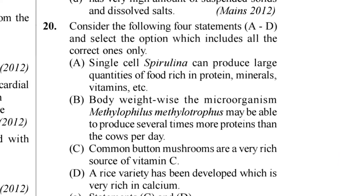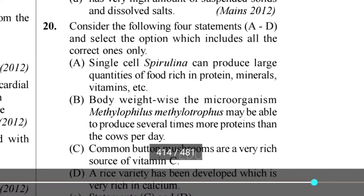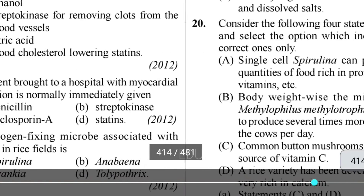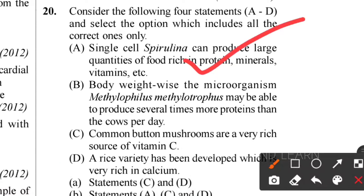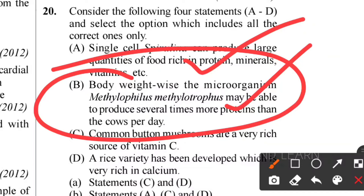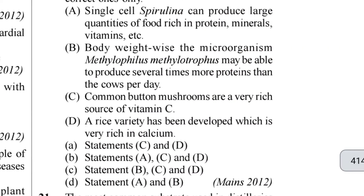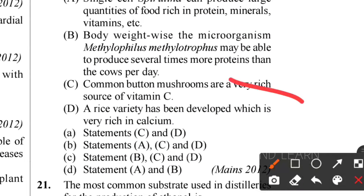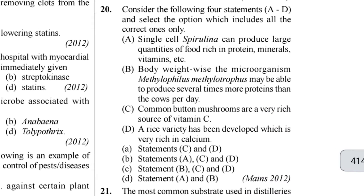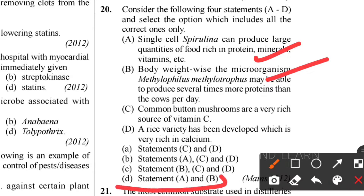Twentieth question: which statements are correct? Statement A - single-cell Spirulina can produce large quantities of food rich in protein, minerals and vitamins - correct. Statement B - body weight-wise, the microorganism Methylophilus methylotrophus may produce several times more protein than a cow per day - correct and very important. Statement C - common button mushrooms are rich in vitamin C - wrong. Statement D - a rice variety is very rich in calcium - wrong. So statements A and B are correct; option B is the correct answer.